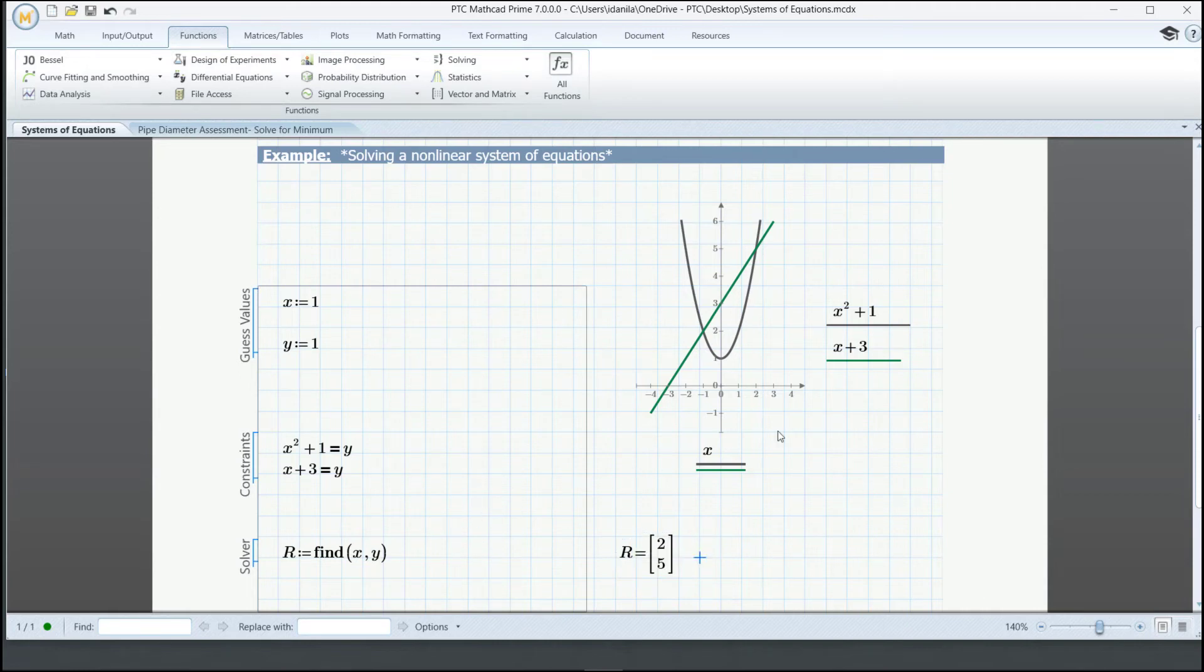But we can observe from the graph that we have two intersection points. To see the value on the negative side of x, we add the constraint that x is less than 0.